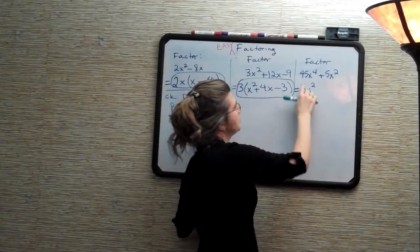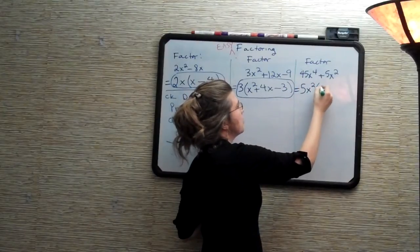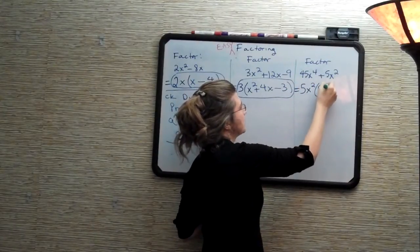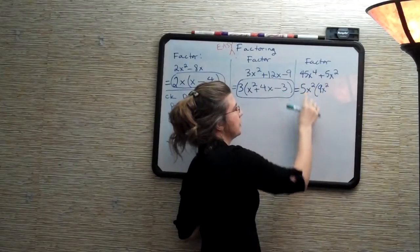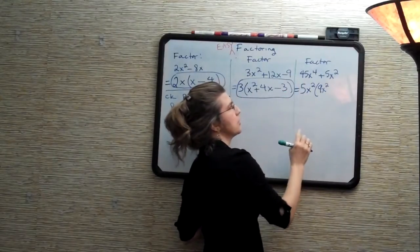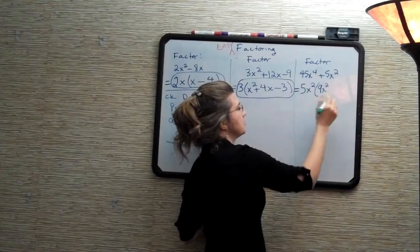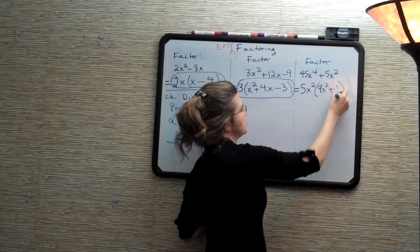So, 5x squared times what gives me 45x to the fourth? That would be times 9x squared since 5 times 9 is 45. And x squared times x squared is x to the fourth. Then 5x squared times what gives me 5x squared? Well, that would just be 1.